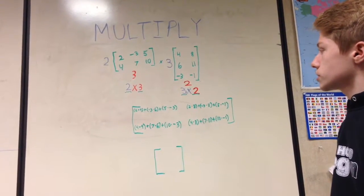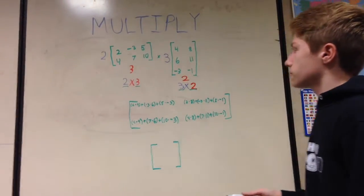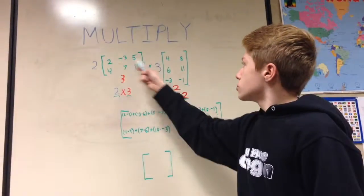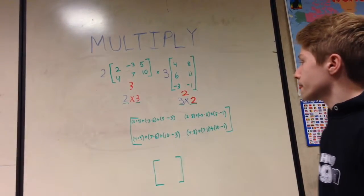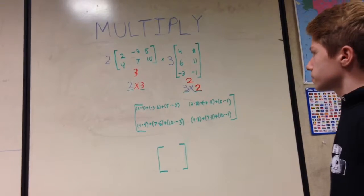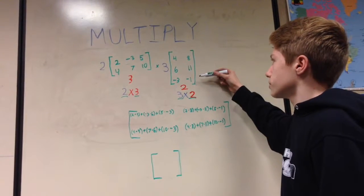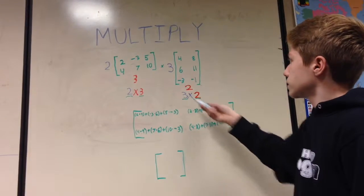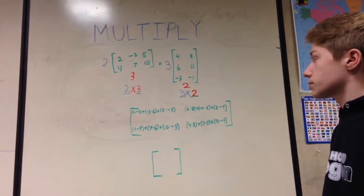When multiplying, for the top left cell, you're going to use the top row of the first matrix and the left column of the second matrix. So you're going to start with two times four, then negative three times six, and five times negative three — the sum of that is the number in the top left. For the top right, you're going to use the top row of the first matrix and the right column of the second matrix: two times eight, negative three times eleven, and five times negative one. That sum equals the top right number.